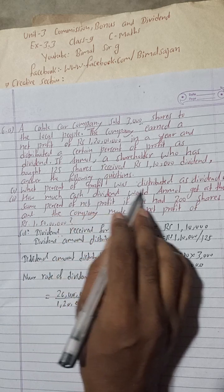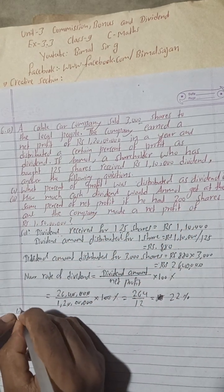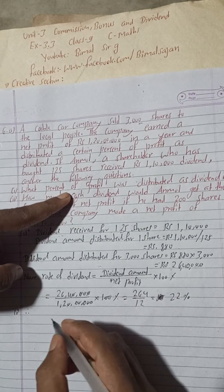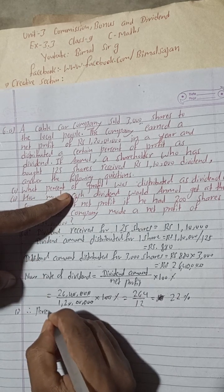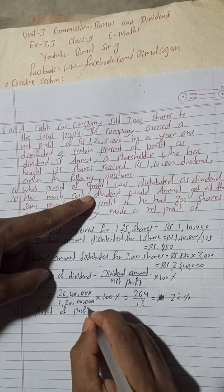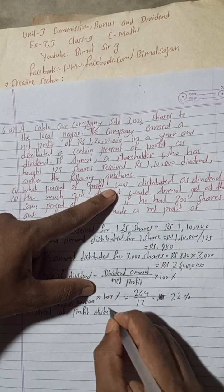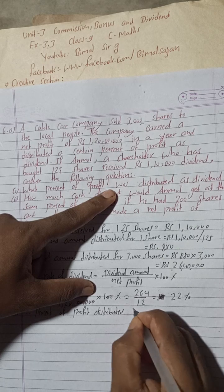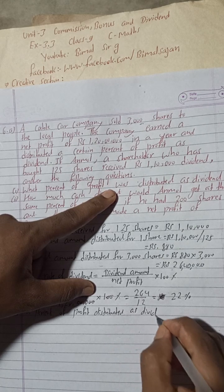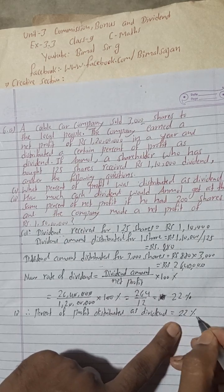Therefore, the percent of profit distributed as dividend is 22 percent. This is the answer to question number one.